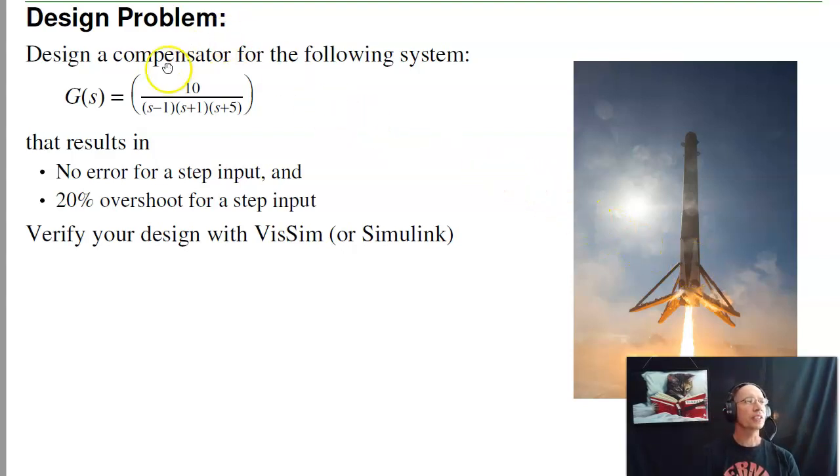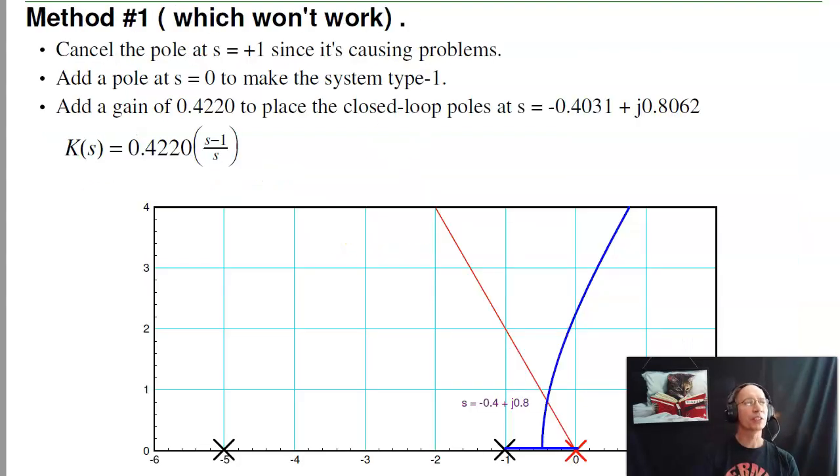So here's the design problem. I've got an unstable system, design a feedback controller to stabilize it, give me no error per step input, 20% overshoot, and verify your design with VisSim or Simulink. So that's the goal.